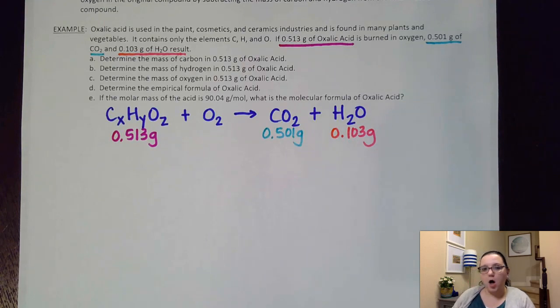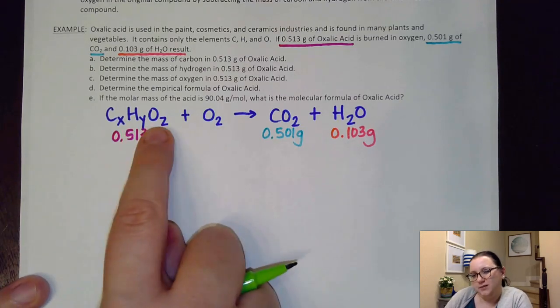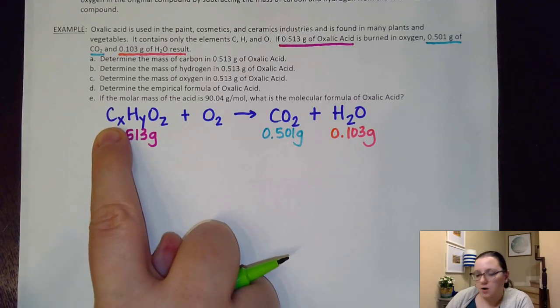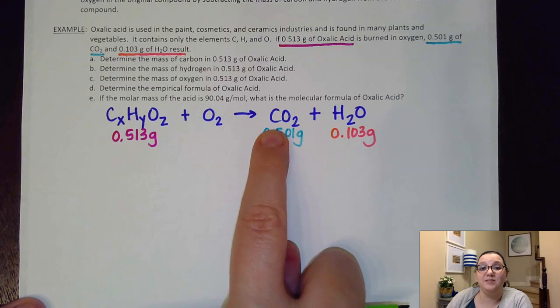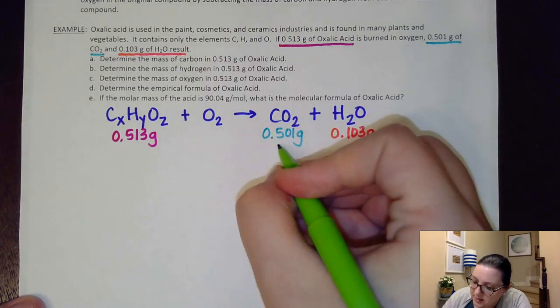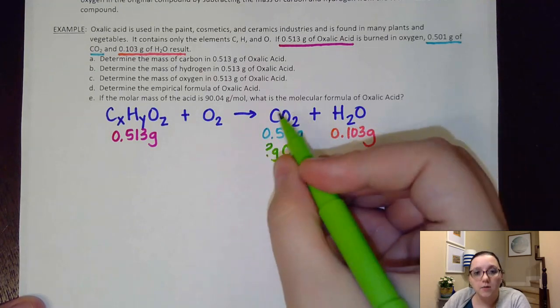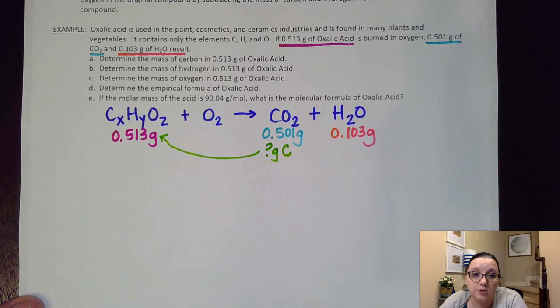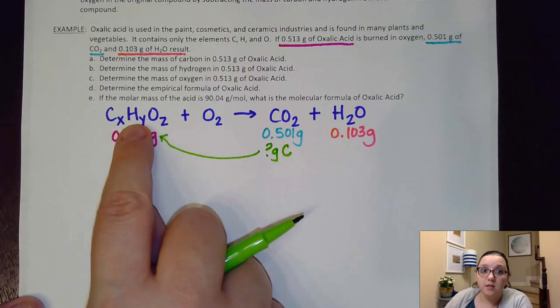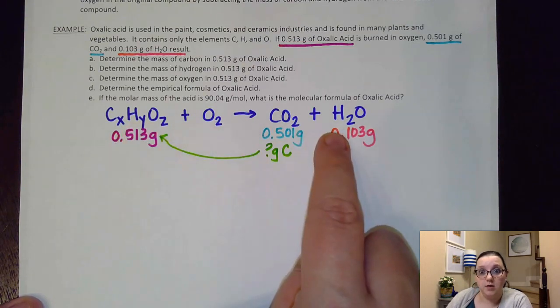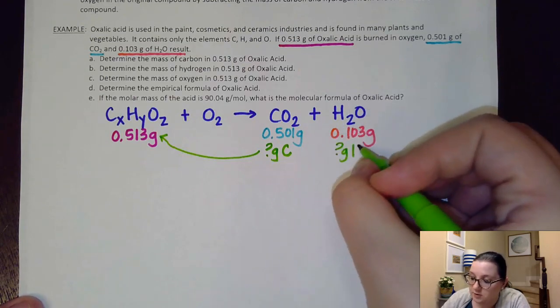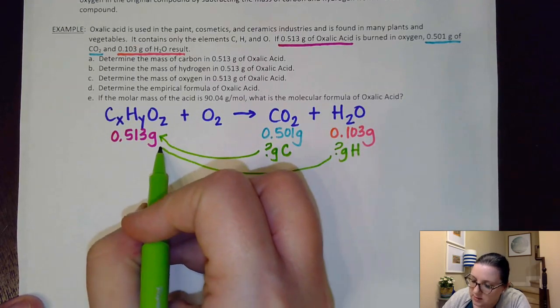So I want to kind of make some observations here about the information that I have. I see that to solve this empirical formula, I typically need how much carbon, hydrogen, and oxygen I have in here. Well, all of the carbon from this compound is all going to end up in this CO2. So by analyzing how many grams of carbon come from this CO2, I can assume that all of those ended up in this compound originally. Same thing goes for the hydrogen. All of the hydrogen that was in this hydrocarbon ended up in this water here. So what that means is out of this 0.103 grams of water, if I can figure out how many grams of hydrogen were in that, again, that would all be present in this 0.513 grams.